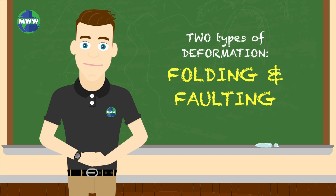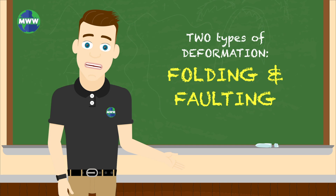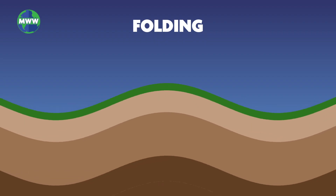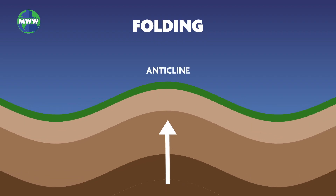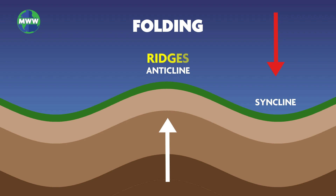There are two types of deformation: folding and faulting. Rocks can fold upward, called anticline, or downward, called syncline, which form ridges or valleys.